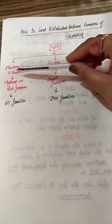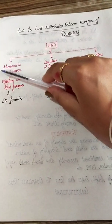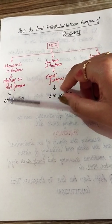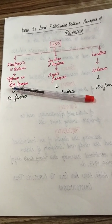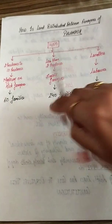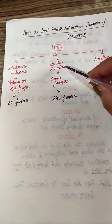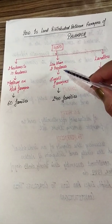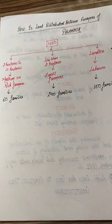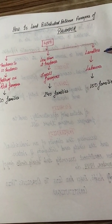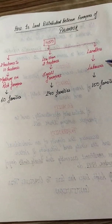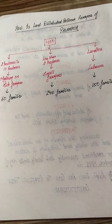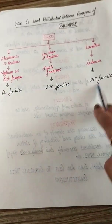The 60 families are those having land from 2 hectares up to 10 hectares — those with a little more than 2 hectares are considered medium farmers, and those with 10 hectares or more are considered rich farmers. The 240 families are small farmers having less than 2 hectares of land. The remaining 150 families are the landless laborers, and they mostly belong to the Dalit community — the SCs and STs.